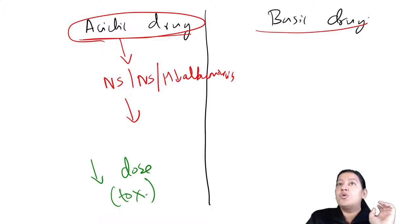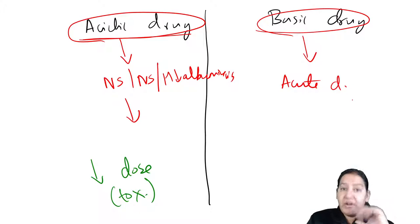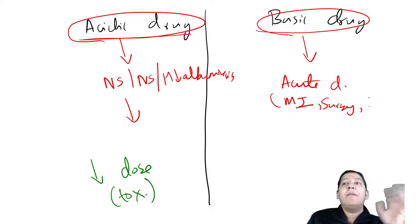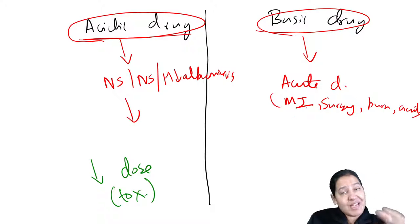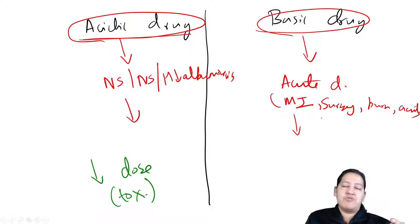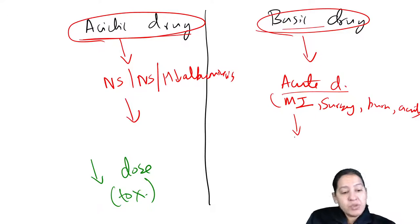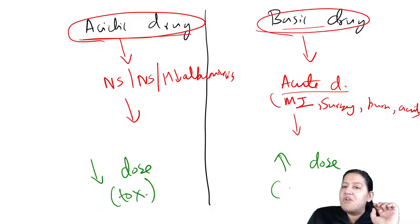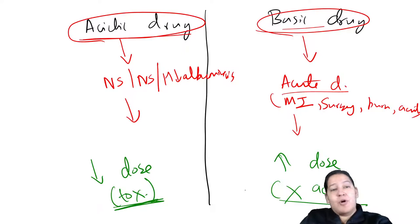If you want to give a basic drug and the patient had an MI a few days ago, surgery, burns, or any acute infection — it is the acute phase reactant that is raised. If the patient is having some acute disease and you give a basic drug, increase the dose. If you don't increase it from the conventional dose, the drug will not show its action because free form is less.